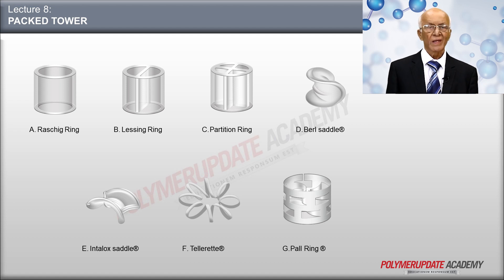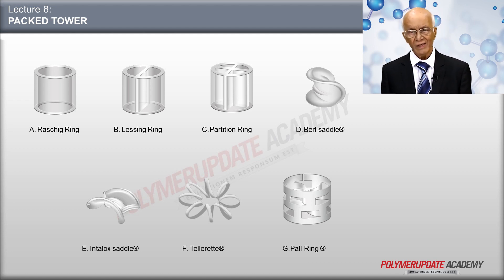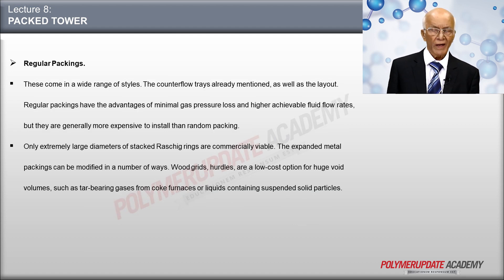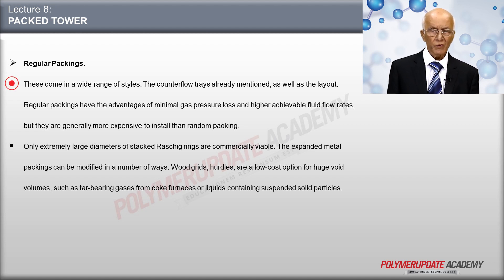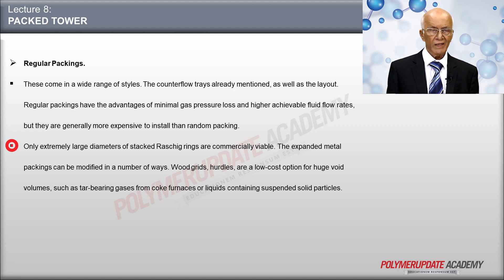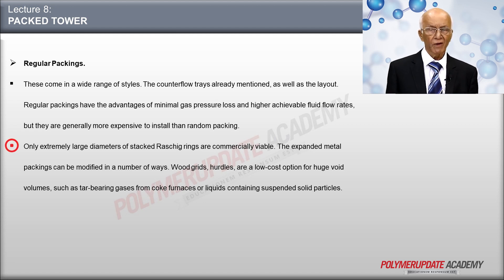In the figure, A is the Raschig ring, B is the Lessing ring, C is the partition ring, D and E are the saddles, F is the Tellerette, and G is the Pall ring. Regular packings are of great variety. The counter-flow type already considered is a form of regular packing. Regular packing offers the advantages of low pressure drop for gas and greater possible flow of liquids, usually at the expense of more costly installation than random packing. Stacked Raschig rings are economically practical only in very large sizes, and there are several modifications of expanded metal packing.